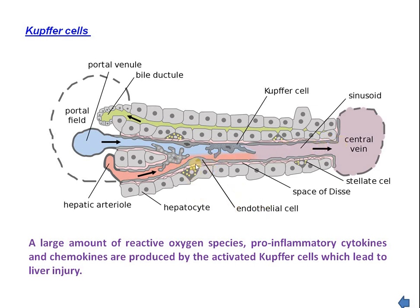Kupffer cells, along with endothelial cells, are responsible for phagocytic activity. They can produce reactive oxygen species, pro-inflammatory cytokines, and chemokines. Cytokines are protein or polypeptide chemical substances responsible for generating immune responses by stimulating different immune cells. Chemokines are small molecular proteins also responsible for stimulating the immune system. When pathogenic substances enter the sinusoids, Kupffer cells are activated and show phagocytic activity, produce cytokines, chemokines, and reactive oxygen species, helping to protect the body.